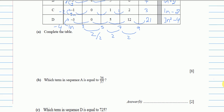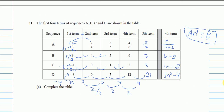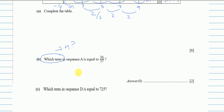Part b asks: which term in sequence a equals 36/37? We use the formula for sequence a, which was n/(n+2). We set n/(n+2) = 36/37 and cross-multiply to solve for n.